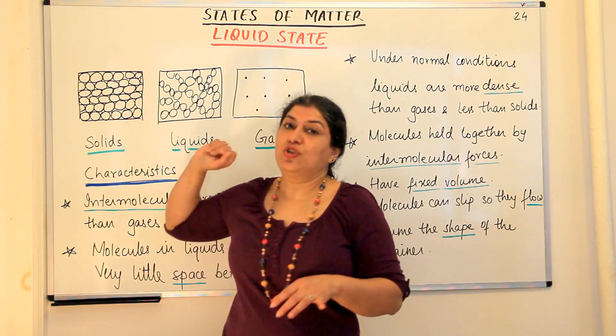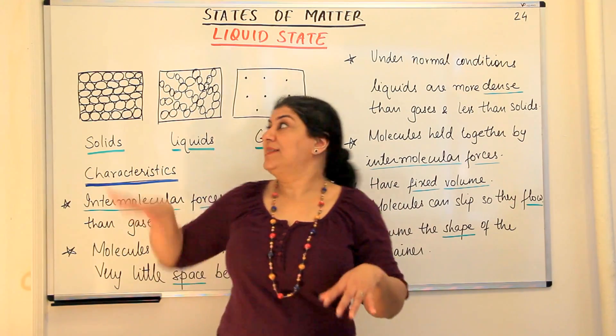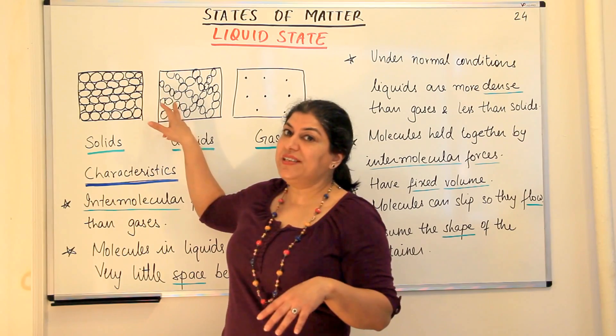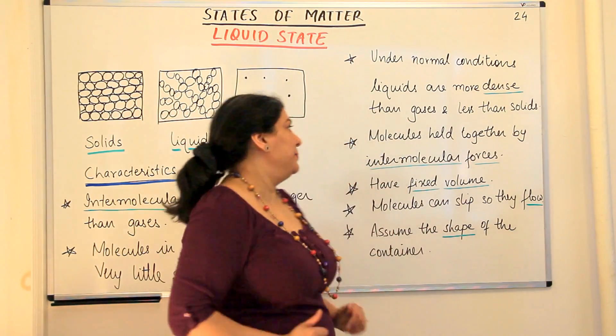So we say that under normal conditions liquids are more dense than gases and they are less dense than solids because the number of molecules per unit volume is the most in solids, lesser in liquids, and the least in gases, so obviously their density also falls in between them.